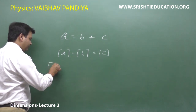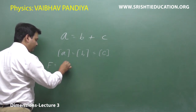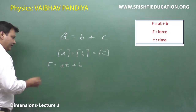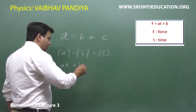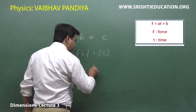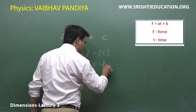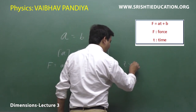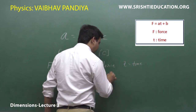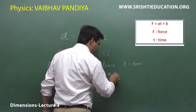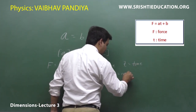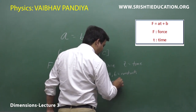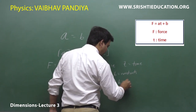Let's look at an illustration: F equals a times t plus b, where F denotes force, T denotes time, and a and b are constants. We need to find the dimensional formulas of a and b. Note that even though a and b are constants, they can still have dimensional formulas — constants fall into two categories: dimensional and dimensionless.